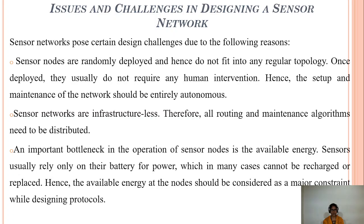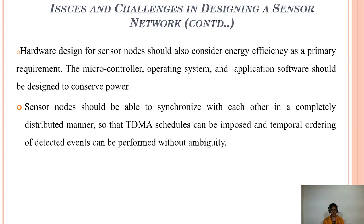Next we will discuss issues and challenges in designing sensor networks. Sensor networks are randomly deployed and do not have any regular topology; they do not require human intervention. Setup and maintenance of the network should be entirely autonomous. Sensor networks have less infrastructure, so routing mechanisms and maintenance algorithms need to be distributed. The most important constraint for a sensor node is energy. Sensors usually rely only on a unit battery for power, which in many cases cannot be recharged or replaced. The available energy at a node should be considered the major constraint for designing protocols, and hardware design should make energy efficiency a primary requirement.